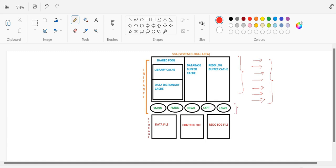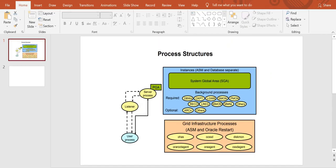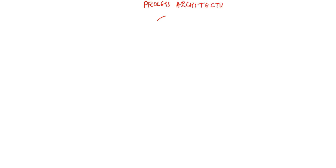Moving forward with the background architecture and background processes, today we are going to discuss about the process architecture. In the process architecture, number one is the user process. Multiple times we have used this terminology - user process - when a user is triggering some commands, like whenever you are triggering some SQL statements whether it is DML, DQL, DDL or anything, a user process is being generated.